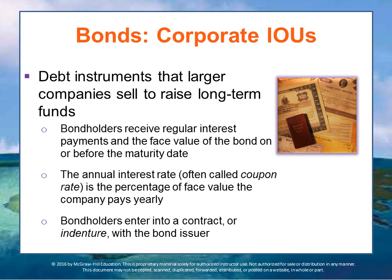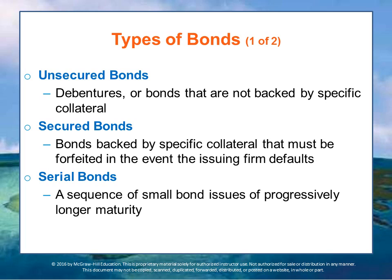Those payments could come in the mail as your interest payments, or they could also be accrued into the principal. There are a great many different types of bonds. Most are unsecured bonds, meaning that they are not backed by collateral — such bonds are termed debentures. Secured bonds are backed by specific collateral, which must be forfeited in the event the issuing firm defaults, like a real estate loan. Serial bonds are usually a sequence of small bond issues with progressively longer maturity over time — short-term, medium-term, long-term, a series of bonds with progressively longer maturity.